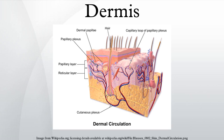The papillary region is composed of loose areolar connective tissue. It is named for its finger-like projections called papillae that extend toward the epidermis and contain either terminal networks of blood capillaries or tactile Meissner's corpuscles.